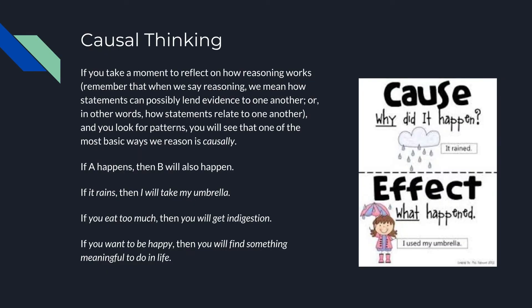If you take a moment to reflect on how our human reasoning works — which is what we're going to be doing for this whole section subtitled 'reasoning' — and you start to look for patterns, you can see that one of the most basic ways that human beings reason is causal. All that means is cause and effect. When we look at what makes us act the way that we do, we always think that there are causes or reasons for something else happening, either simultaneously or in the future.